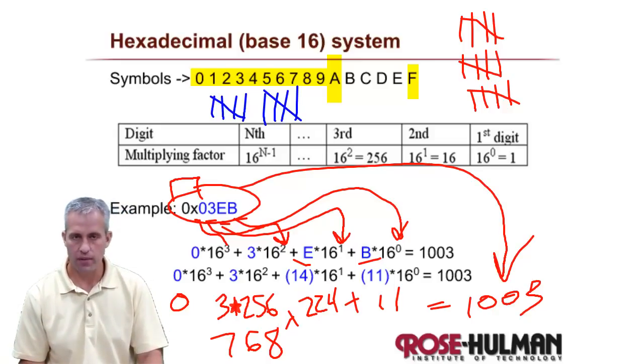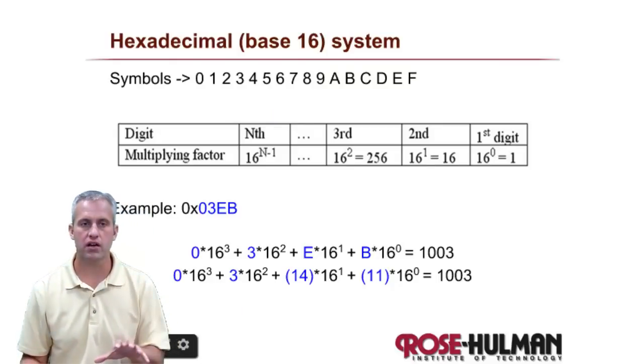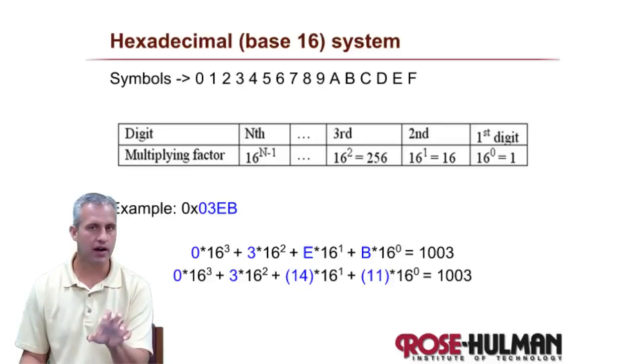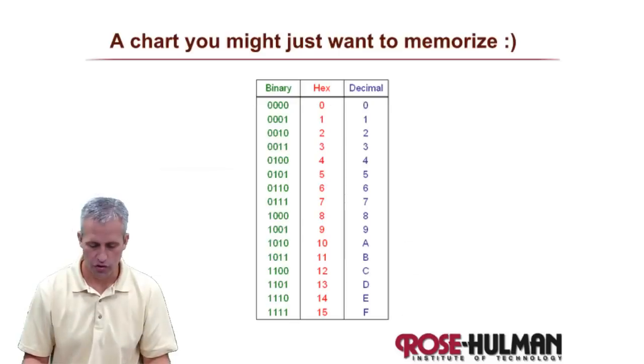So it's a different base, it's something new. It is useful because it's a shorthand way of representing binary, which we'll get to later. So this is the third and final base that we care about for computers.